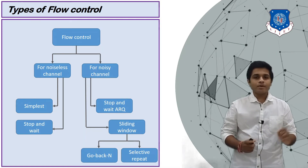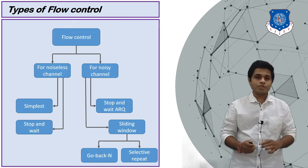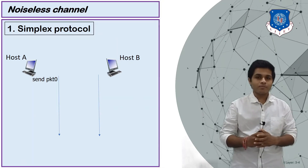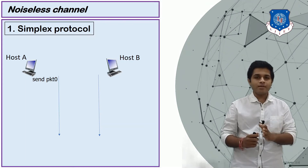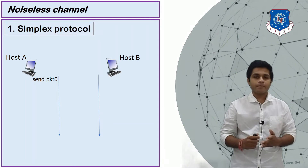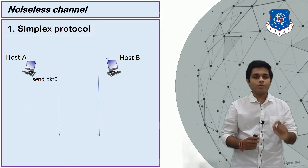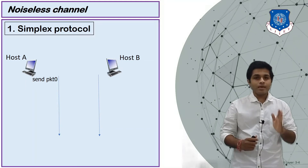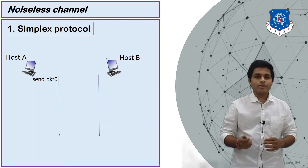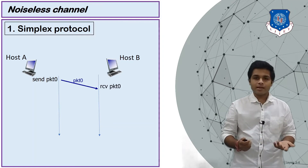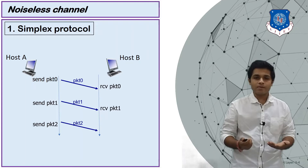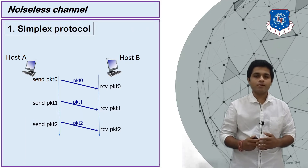Let's start with the first type for the noiseless channel, which is the simplex protocol. Two devices A and B are connected, and A is sending a message to B. Simplex protocol means communication is only in one direction — A will only send and B will only receive. A sends packet 0, B receives packet 0; after some time A sends packet 1, B receives packet 1; A sends packet 2, B receives packet 2.